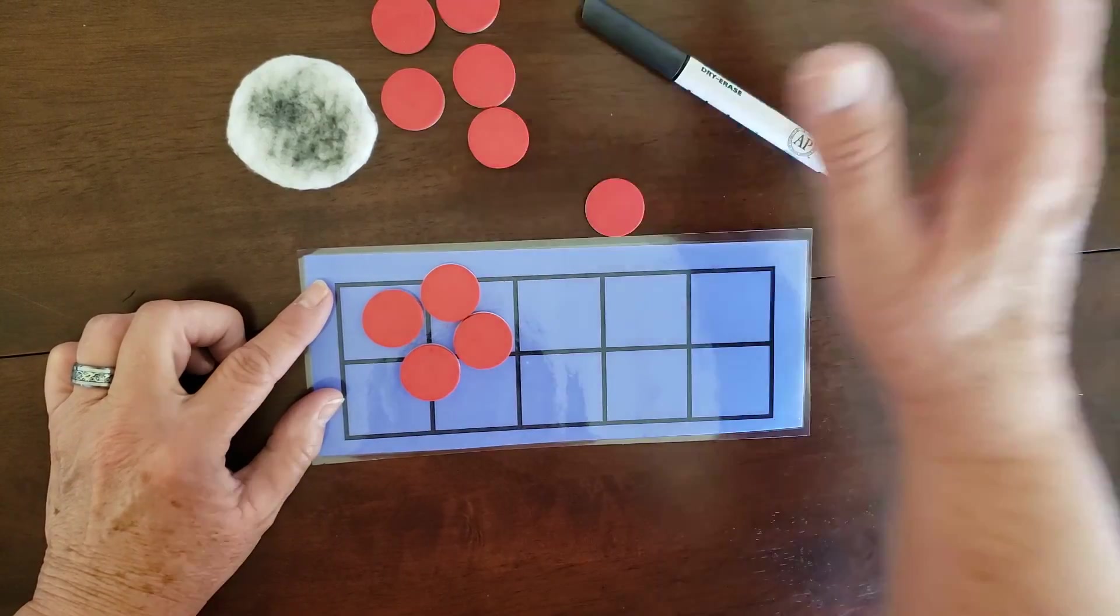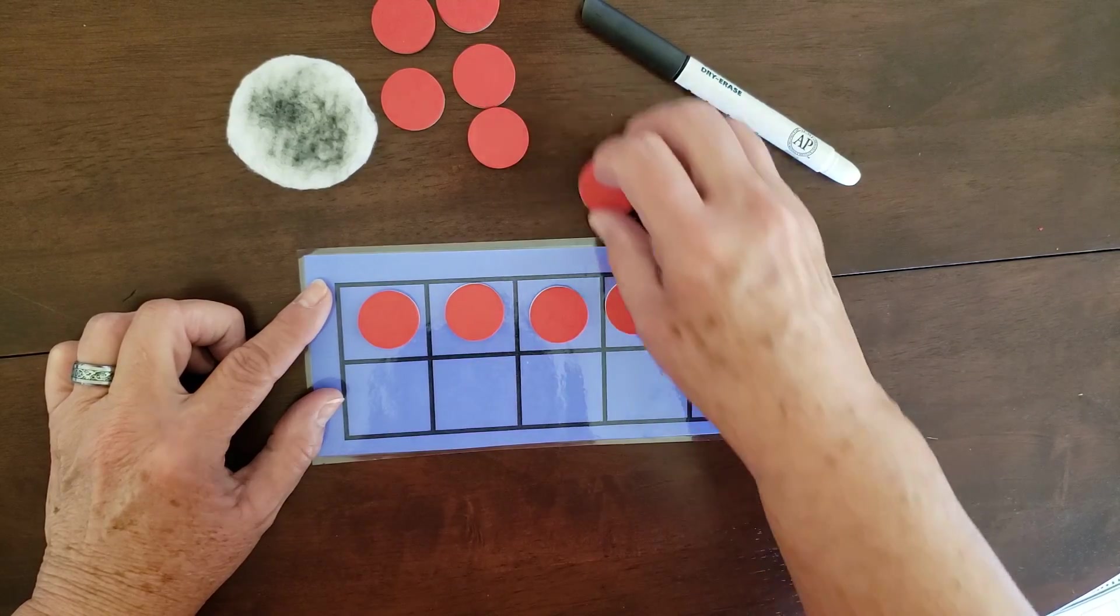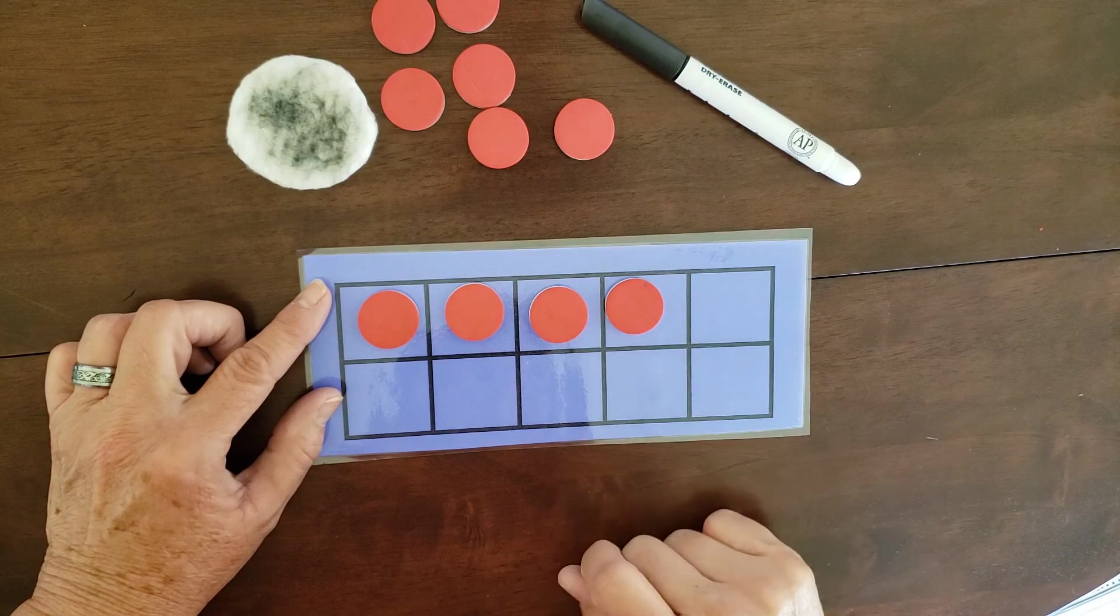where you have things all over the place, math will be harder for you. So if we start learning that now, we'll know that we're organized and we start in the top row, okay?